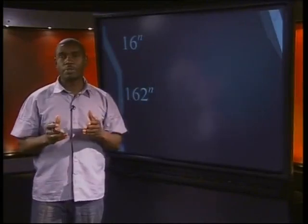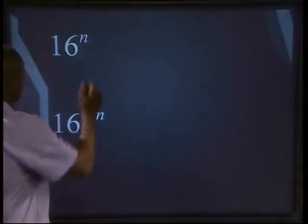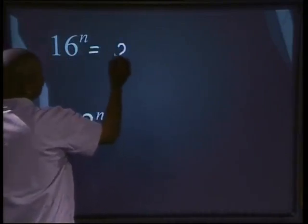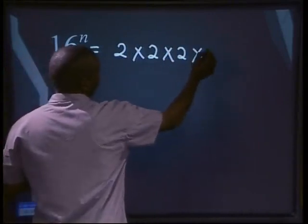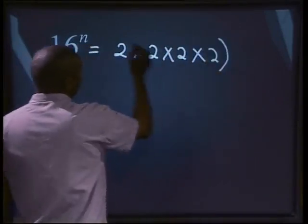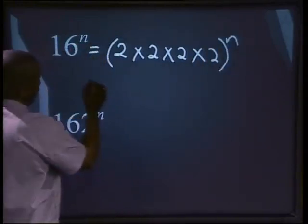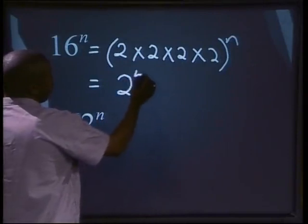So every natural number can be written as a product of prime numbers. Now let's apply prime factorizing to simplify exponential expressions. Let's find the prime factors of the following and then write the factors as powers. 16 to the power of n. 16 can be written as 2 times 2 times 2 times 2, four times, all to the power of n. And this can be written as 2 to the power of 4n.